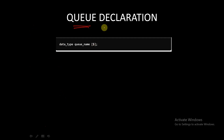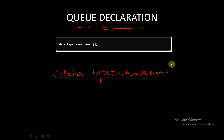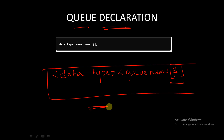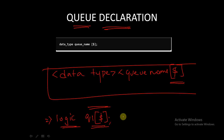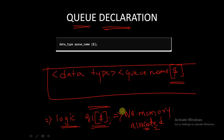This is the declaration syntax for a queue. Similar to dynamic arrays, we write the data type first, followed by the queue name, followed by a dollar symbol inside square brackets. For example, to declare a queue of logic data type: logic my_queue[$]. At the declaration stage, no memory is allocated for this queue. During runtime, when we insert an element, memory will be allocated for this queue.